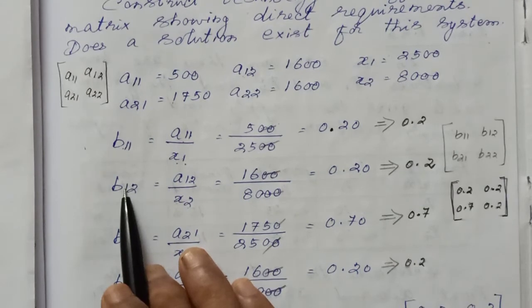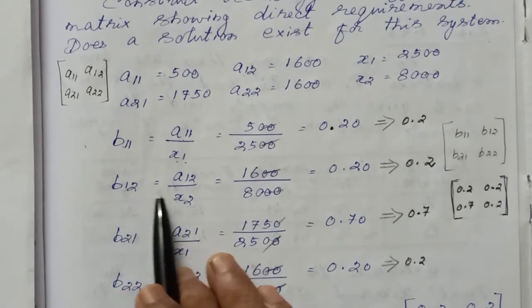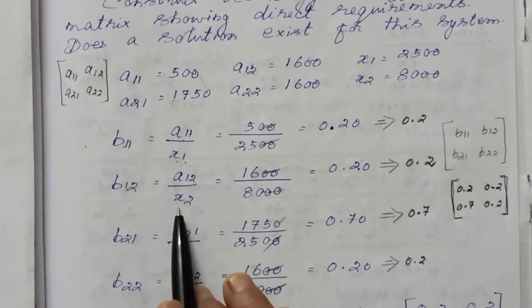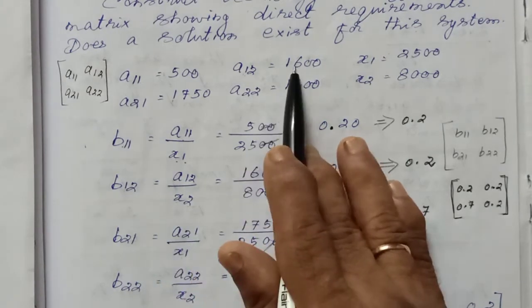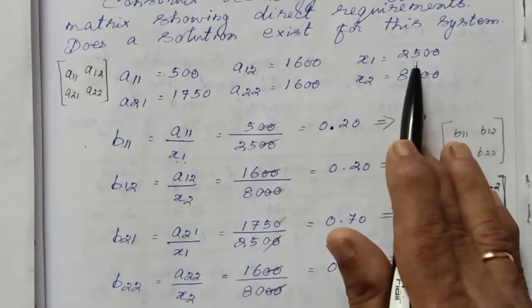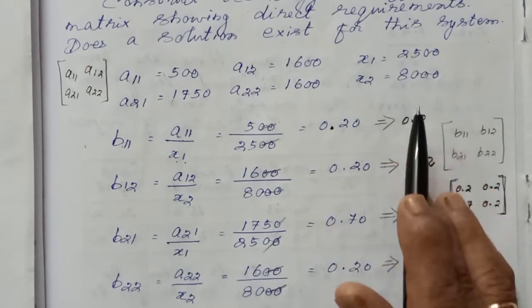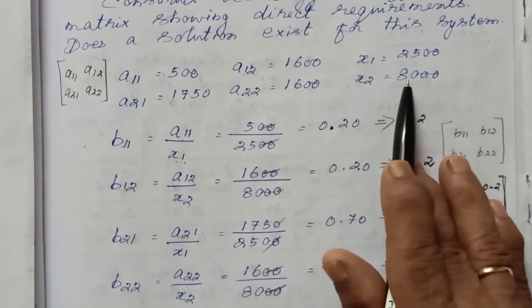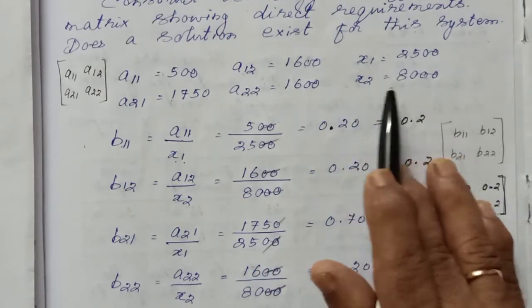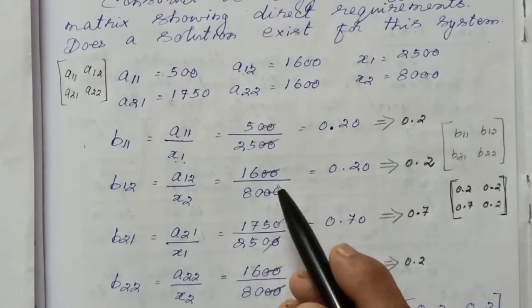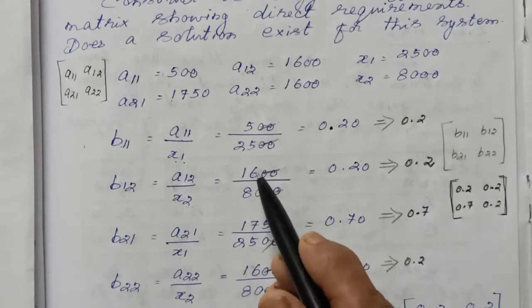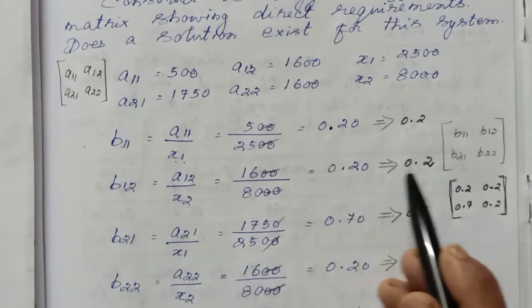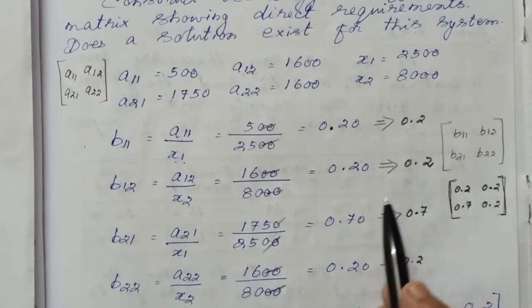For the 1st row, 2nd column: A12 divided by x2. A12 is 1,600 and x2 is 8,000. So A12 equals 8,000 divided by 10,000.